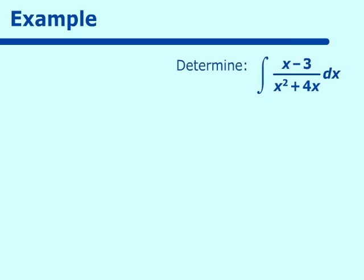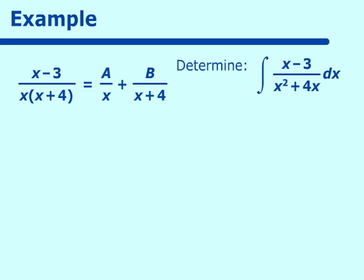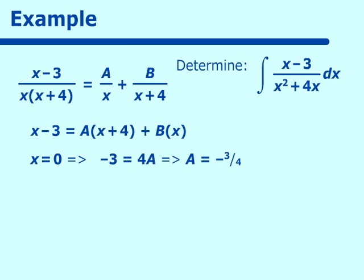Let's try another example using partial fractions. We integrate x minus 3 over x squared plus 4x. First, factor the denominator as x times (x plus 4), then set up a over x plus b over (x plus 4). So x minus 3 equals a times (x plus 4) plus b times x. Setting x equal to 0 gives negative 3 equal to 4a, so a equals negative 3 fourths. Setting x equal to negative 4 gives negative 7 equal to negative 4b, so b equals 7 fourths.